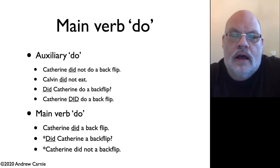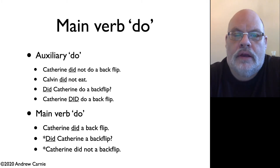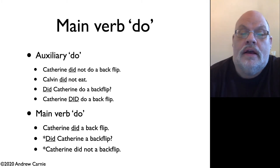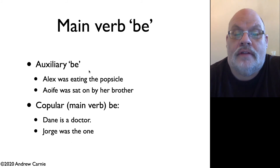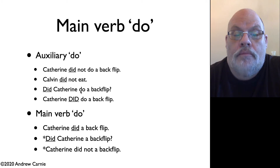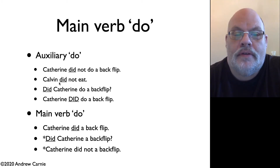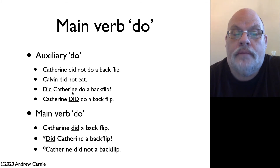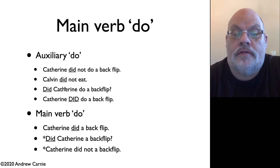One of the ways we can identify that this do is an auxiliary is to notice that in at least three of these sentences, there's actually a second do — that second do is the main verb do, while the underlined ones are the auxiliary do. We know they're auxiliaries because you can do subject-auxiliary inversion.